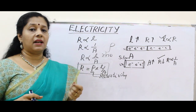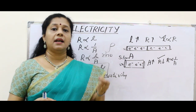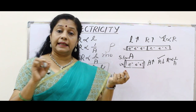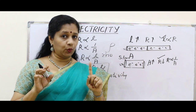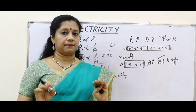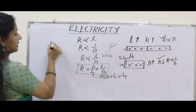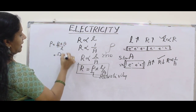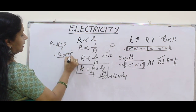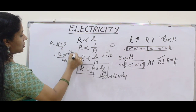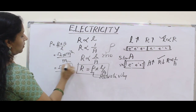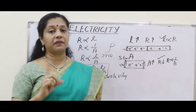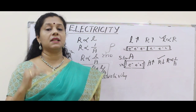Sometimes in an examination they will ask: a wire of some resistivity has its length doubled — what is the new resistivity? If you don't read carefully, you may calculate incorrectly. Resistivity does not change when length changes. To find the unit of Rho: Rho = R × A / L. Since R is in Ohm, A in metre squared, and L in metre, the unit of resistivity is Ohm metre. The unit of resistance is Ohm; the unit of resistivity is Ohm metre.